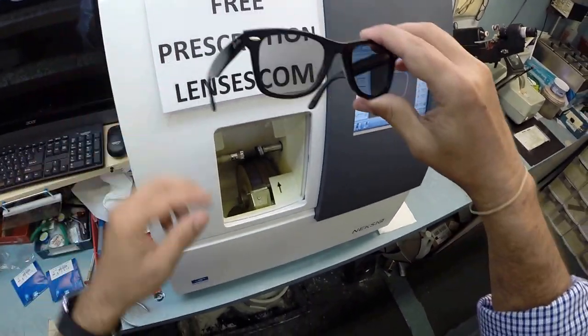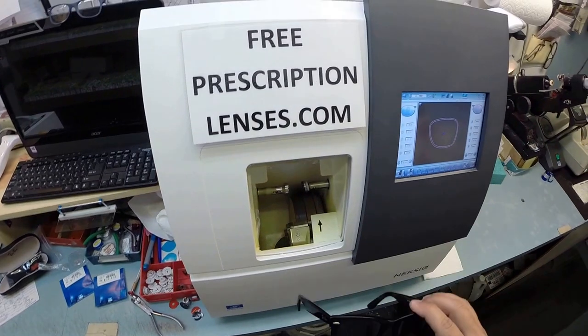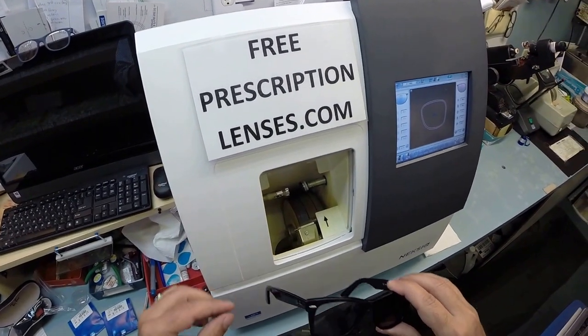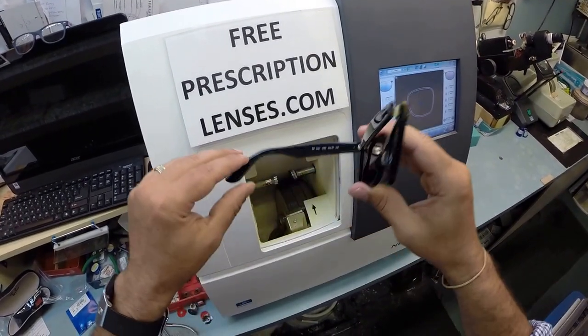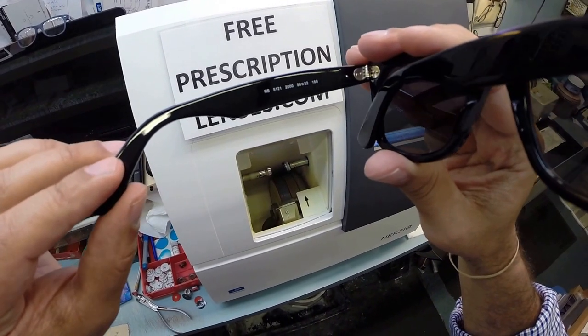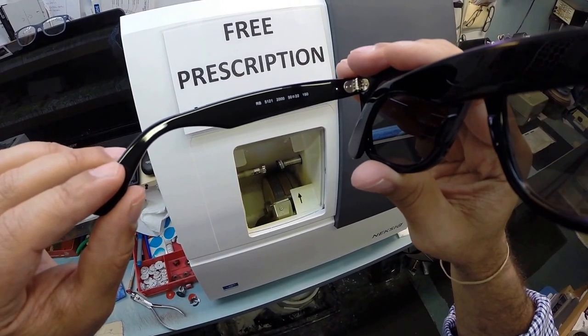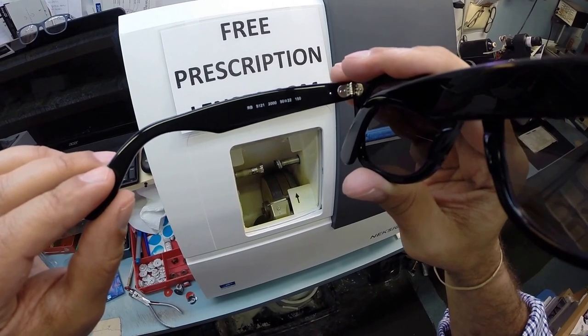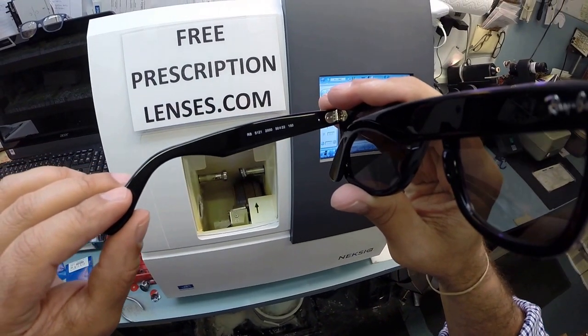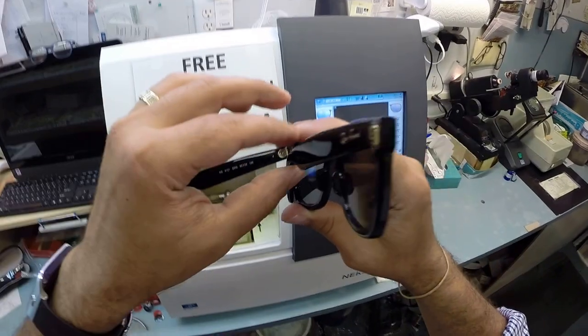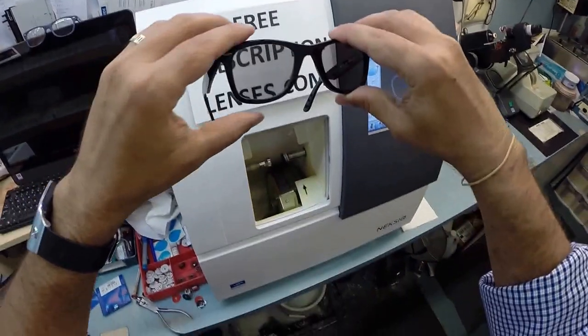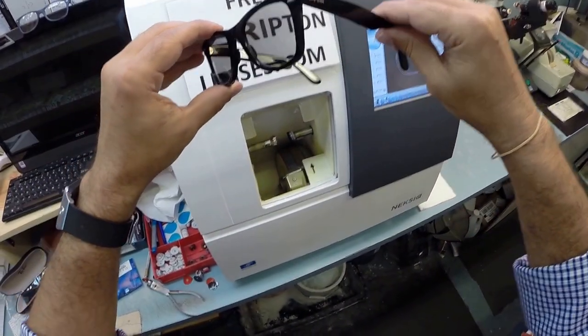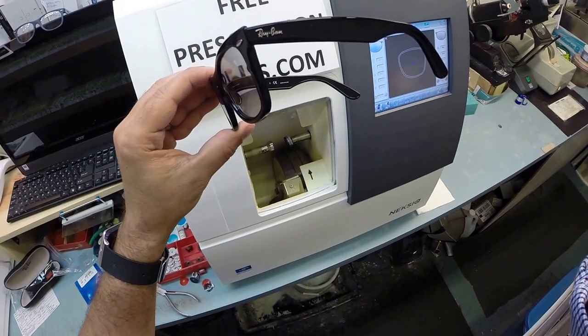If anyone has any questions about what I can or can't do, just email me at freeprescriptionlenses at gmail.com. Olayinka in Phoenix, Arizona. Hope you enjoyed watching as I cut plus 125 transitions gray lenses for your Ray-Ban 5121 color 2000, the shiny classic black in the 50 eye size, and everyone else has got the chance to see how I bring the love and feeling back to glasses. Thank you.